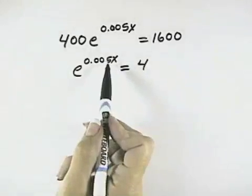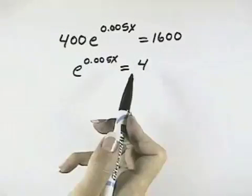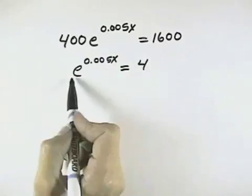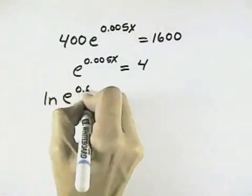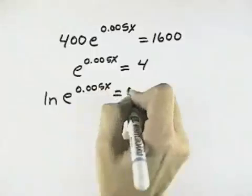Now to get the x out of the exponent, I'm going to take the log of both sides. Because this exponent has a base of e, I'm going to choose the natural log of both sides.